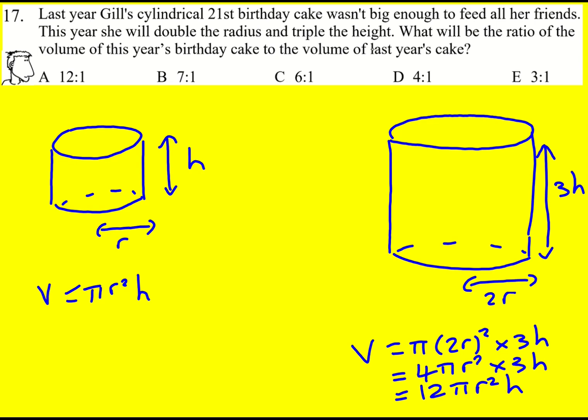So the ratio of the volume of this year's to last year's is going to be 12 pi r squared h to pi r squared h, and we can divide through by pi r squared h, giving us 12 to 1 is the answer.